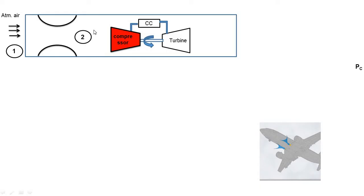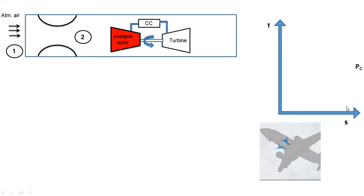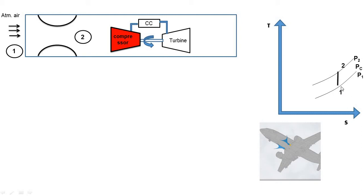Isentropic means constant entropy. When pressure is increased, temperature is also increased. On the T-S diagram, the Y-axis is temperature and the X-axis is entropy. Point one lies on the P1 pressure curve line. Since it is isentropic compression, entropy is constant (S1 equals S2), pressure increases from P1 to P2, and temperature increases from T1 to T2. We draw a vertical line from point one to point two on the P2 line.